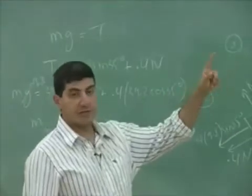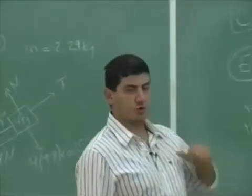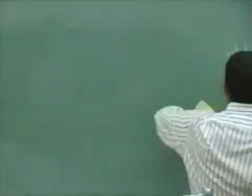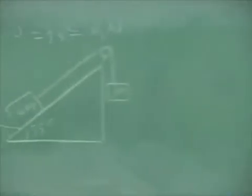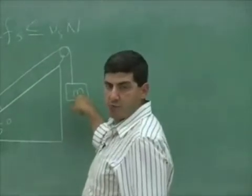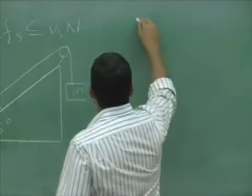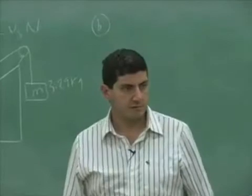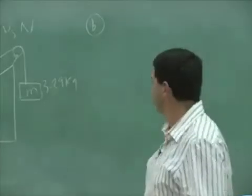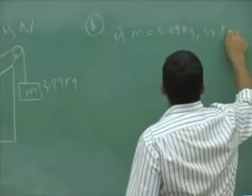So if I want to go to part B — the answer to part A is 2.29, so one kilogram more is 3.29 kilograms. If I put 3.29 kilograms, is it going to move? The answer is no — it's not going to move. It's not enough mass. So if M equals 3.29 kilograms, the system doesn't move.